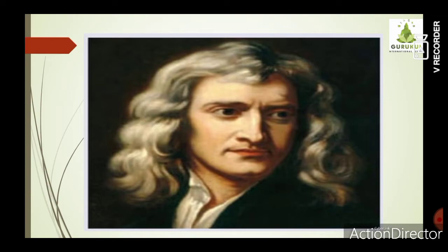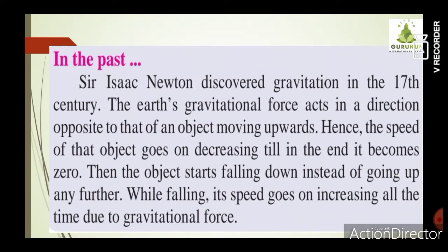Newton also gave the law of motion. The earth's gravitational force acts in a direction opposite to that of an object moving upwards, so the speed of that object decreases until it becomes zero. When we throw a ball, because of muscular force it moves upward, but at a certain point, as that force acts against gravitational force, it becomes zero and the ball comes down. Hence the speed goes on decreasing until it becomes zero, and then the object starts falling. While falling, its speed goes on increasing due to gravitational force.